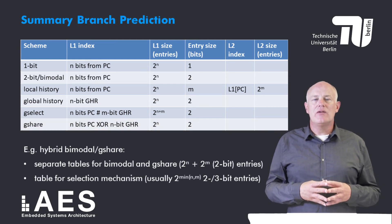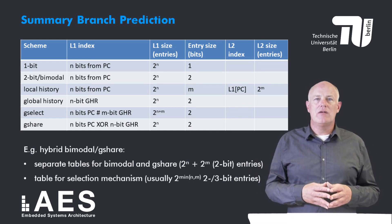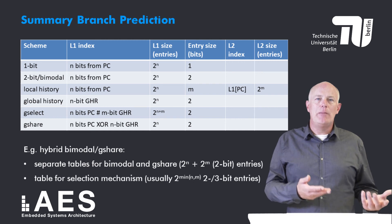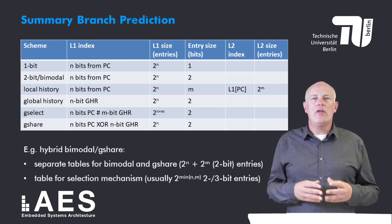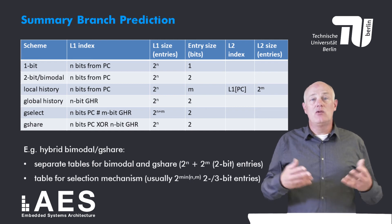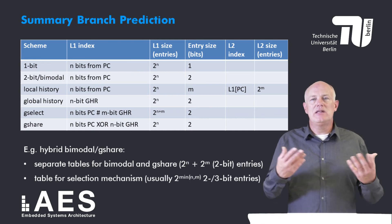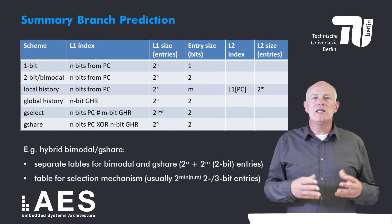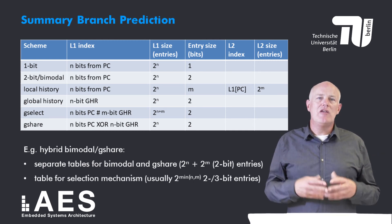The size of a tournament predictor is obtained by adding the sizes of its two component predictors plus a selection table. For example, a bimodal/G-share tournament predictor requires tables of 2^n and 2^m entries respectively, plus a selection table with 2^(min(n,m)) entries. Each selection table entry is typically two or three bits — the FSM described earlier uses two bits, but Avis and Yeh used 3-bit entries because they found better results. When comparing predictors, one should compare those of the same total size.